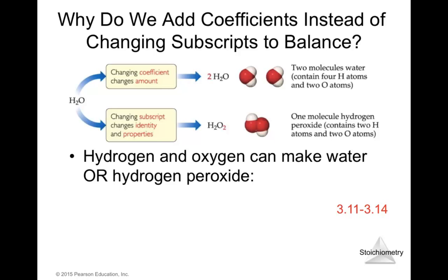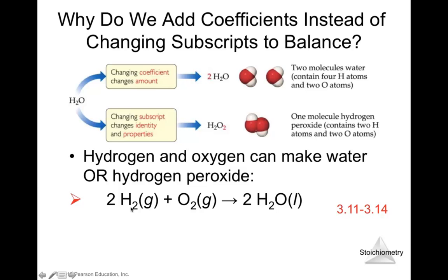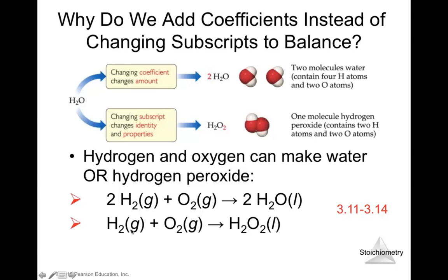Hydrogen and oxygen can make water or hydrogen peroxide. Two moles of H2 plus one mole of O2 produces two moles of water — both hydrogen and oxygen are gases, and water is a pure liquid (L). Alternatively, one mole of H2 plus one mole of O2 produces hydrogen peroxide, also a pure liquid (L). By changing coefficients you change the amount; by changing subscripts you create a totally different compound.